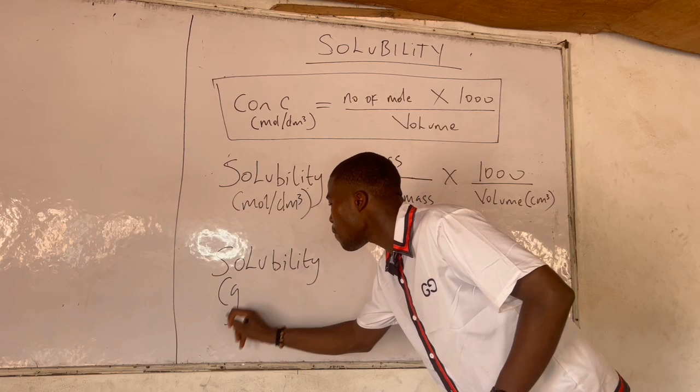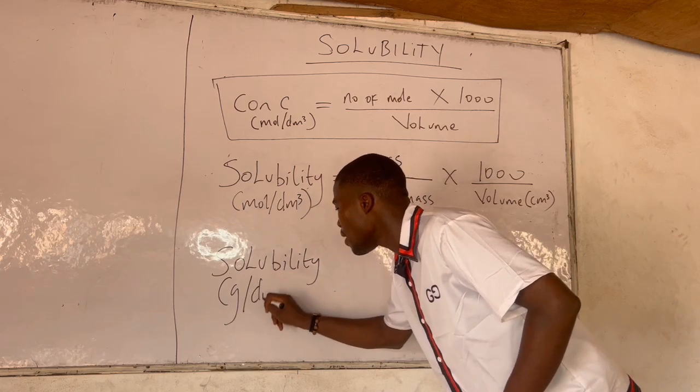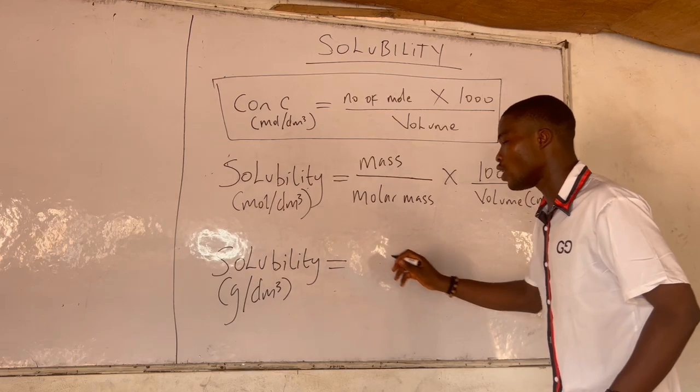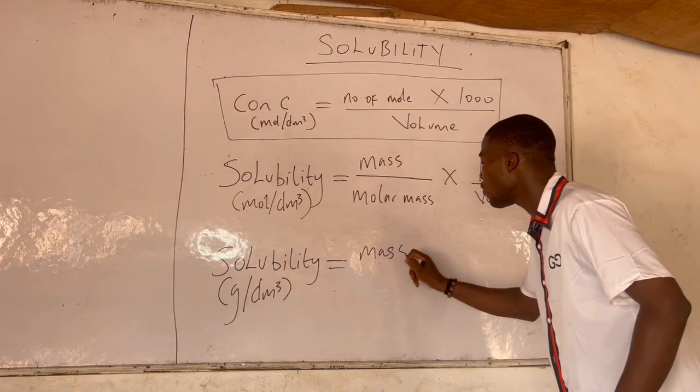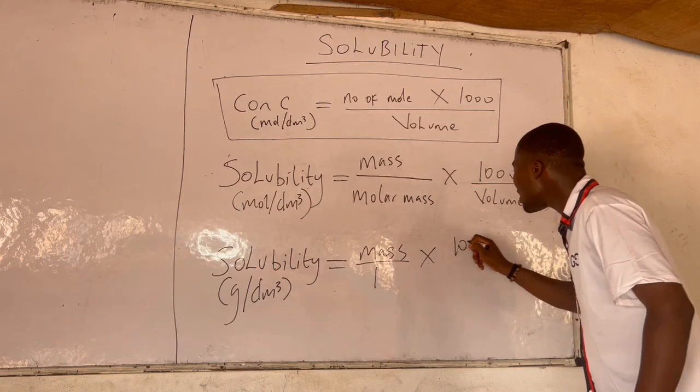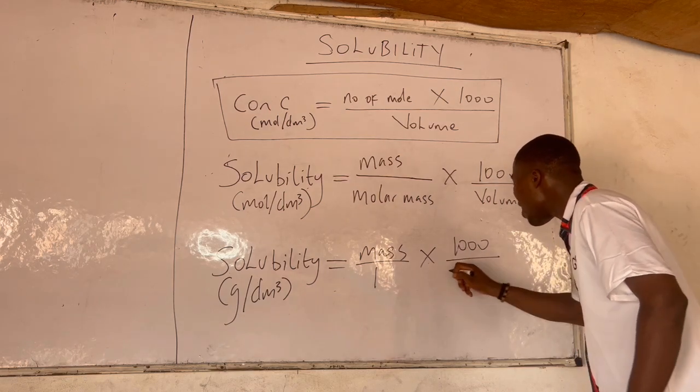Therefore the solubility in gram per dm³ is just to remove molar mass from the formula. So it is going to be mass over 1 times 1000 over volume.